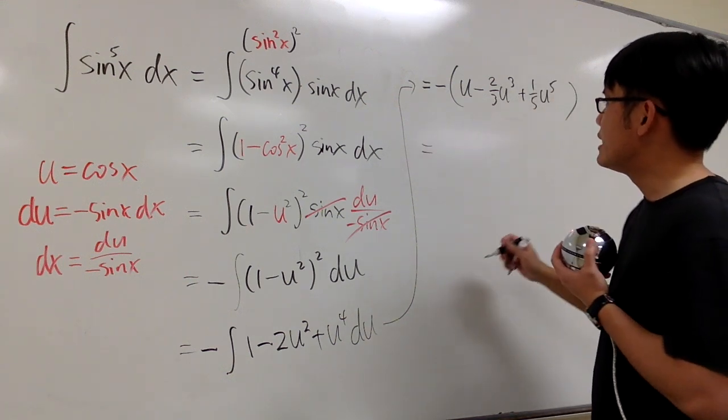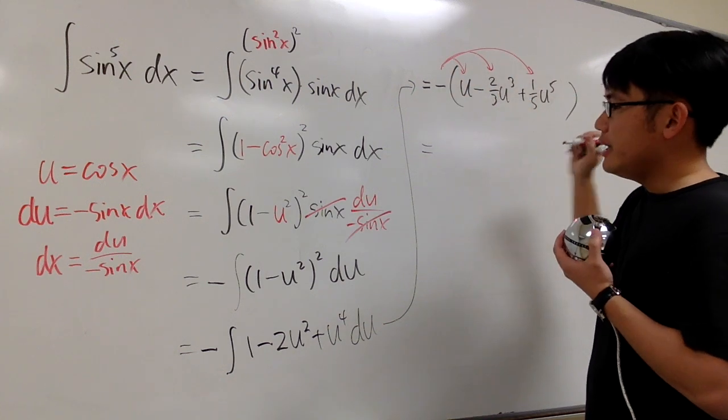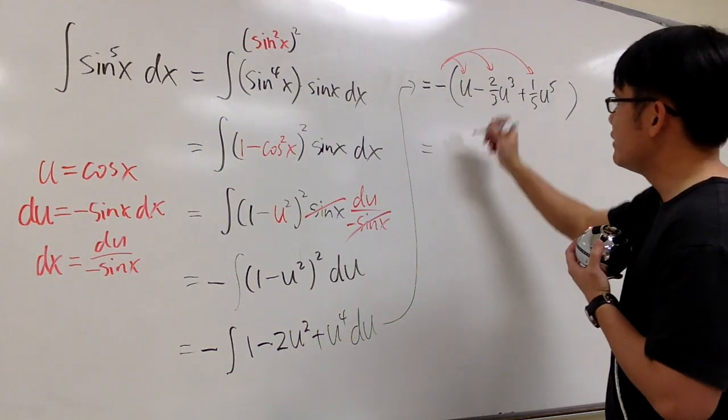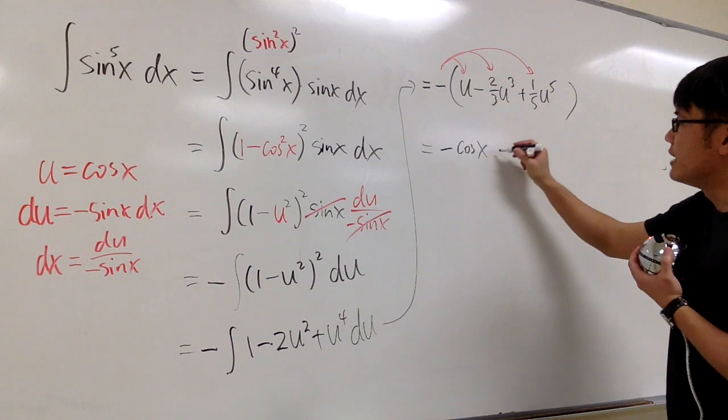And then I'm going to do two things in one step. I will distribute the negative into the parentheses. In the meantime, we know u is equal to cosine x, so I'll change it back. So we have negative u, which is negative cosine x. And then negative times negative, that's plus.